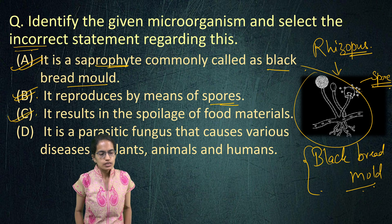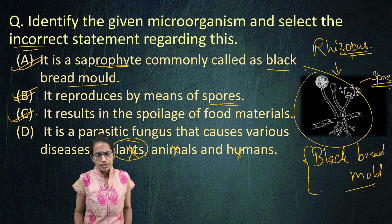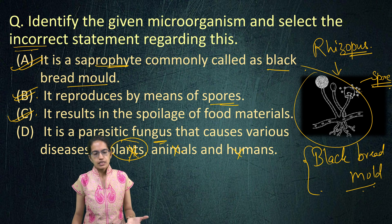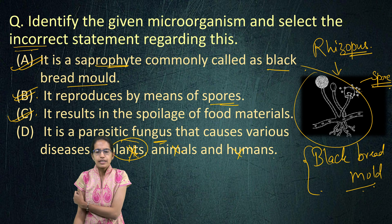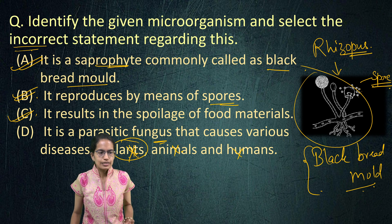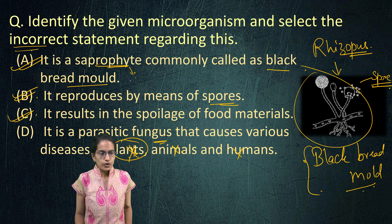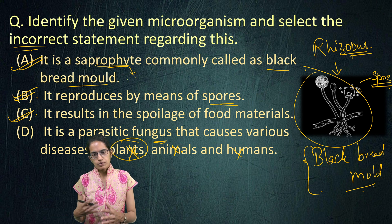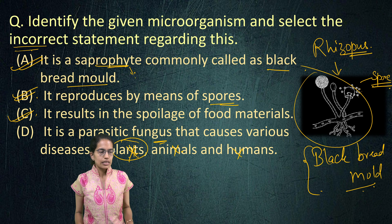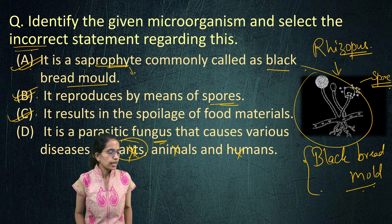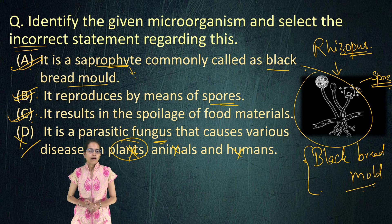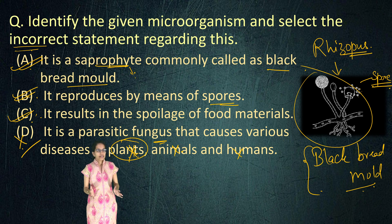The statement that it is parasitic and causes diseases in plants, animals, and humans — only that part is incorrect. It is basically a saprophyte that eats on decaying material. So A, B, and C are the correct options, and D is the incorrect option here. That's how we identify questions like this.